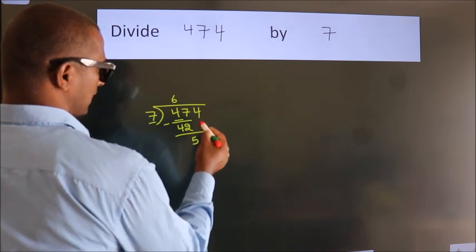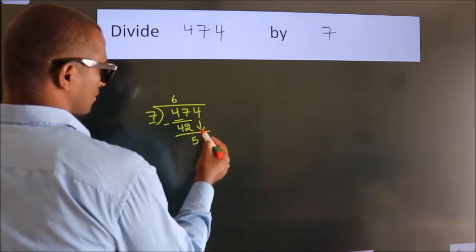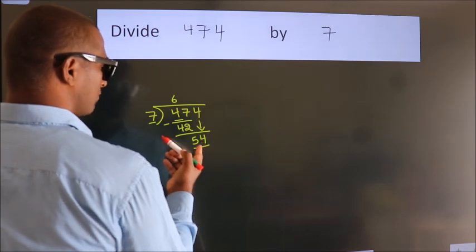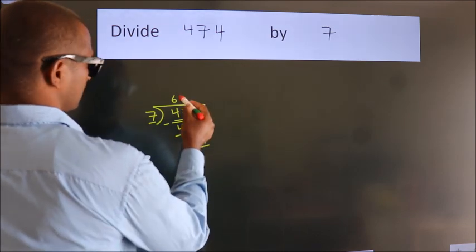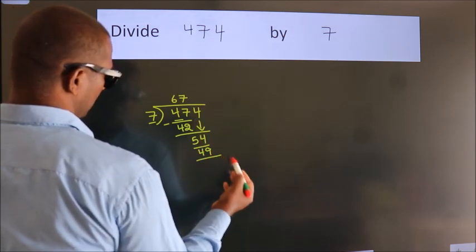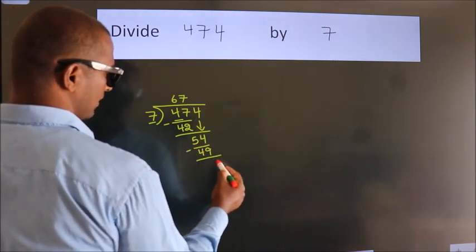After this, bring down the beside number. So 4 down, making 54. A number close to 54 in the 7 table is 7 times 7, 49. Now we subtract and get 5.